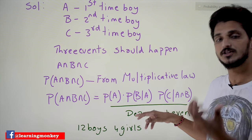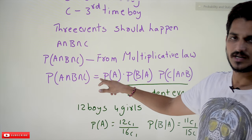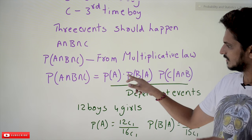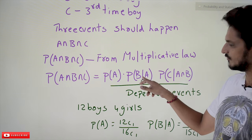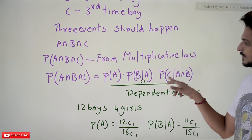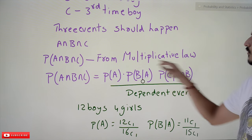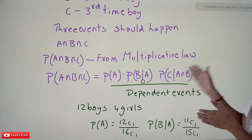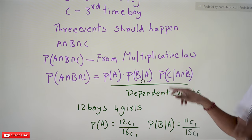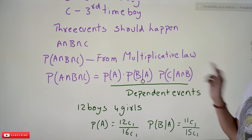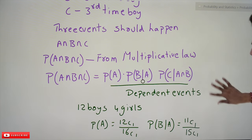P(A ∩ B ∩ C) = P(A) × P(B|A) × P(C|A ∩ B). This is how the multiplicative law works — it can continue for N events. These are all dependent events, that's why we have written conditional probabilities. If they were independent events, it would simply be P(A) × P(B) × P(C).